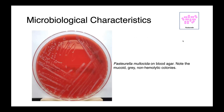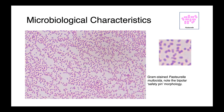Here you can see a pure culture of Pasteurella multocida — note just how mucoid and slimy these organisms are. They produce this very mucilaginous capsule that's really readily visible on an agar plate. In this next image, we have a pure culture of Pasteurella multocida gram-stained, and you can see these short gram-negative rods with an almost cocco-bacillary appearance.